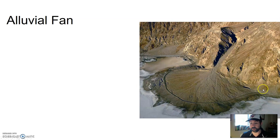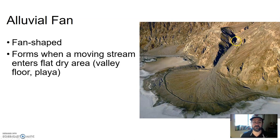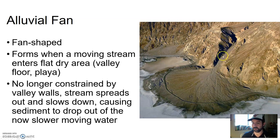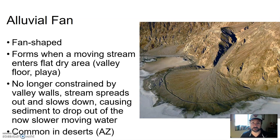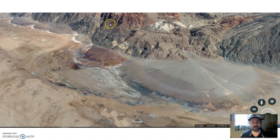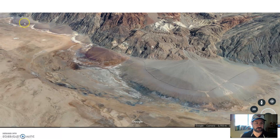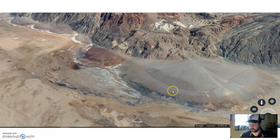An alluvial fan is very similar in shape to a delta — also fan-shaped — but in this case, a moving stream doesn't flow into water. Instead, it flows into flat dry land, like a valley floor or a playa. No longer constrained to valley walls, the stream can go any which way, depositing sediment and forming that fan shape. These are very common in deserts — in Arizona, we get a lot of these at the base of mountains. This is Death Valley, and you can see these stream channels exit from little valleys off the mountains onto the flat valley floor, forming these alluvial fans. The environment would be stream, but the feature itself is called an alluvial fan.